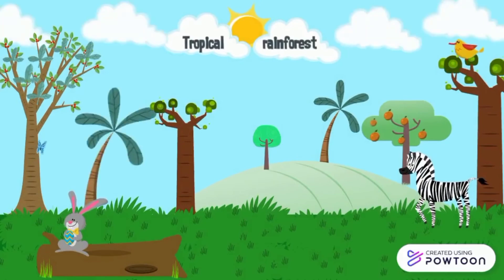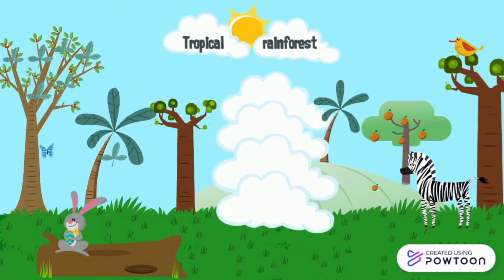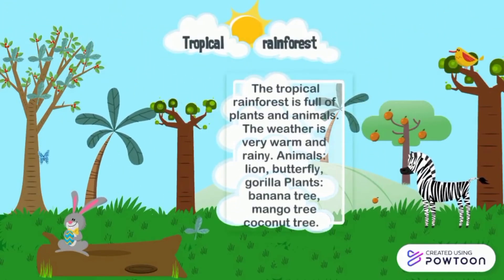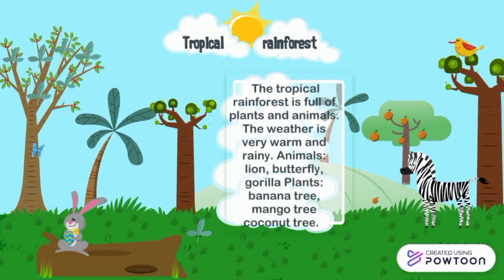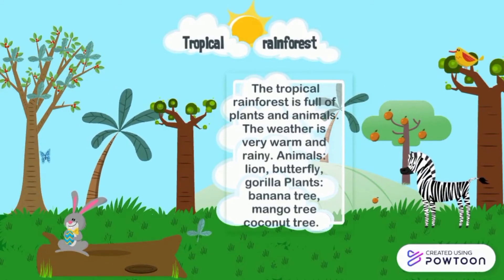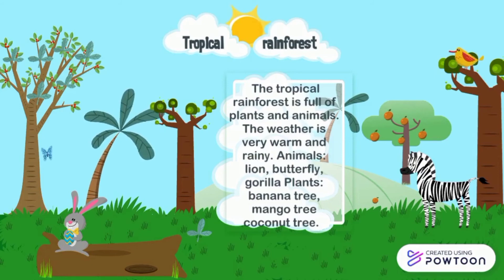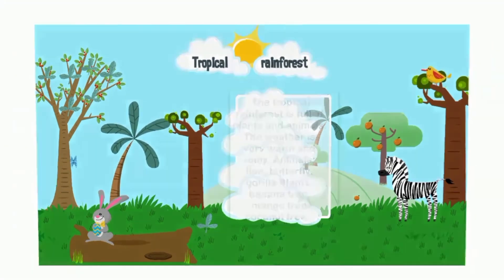The tropical rainforest is full of plants and animals. The weather is very warm and rainy. Animals: lion, butterfly, gorilla. Plants: banana tree, mango tree, coconut tree.